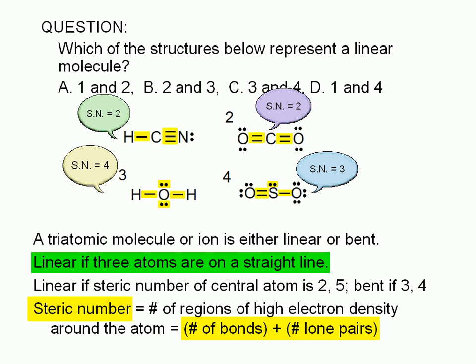Therefore, the correct answer is A. Of the four molecules given here, only hydrogen cyanide and carbon dioxide are linear.